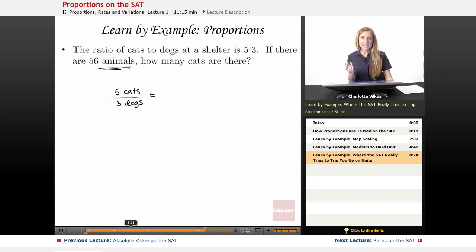So the SAT will set up a problem like this, which is probably a medium to hard proportion problem, and they expect students to put 56 animals down here and then X, which is your number of cats, up here and solve out and get your number of cats. But you know not to do this because over here I have cats over dogs and here I have cats over animals, which isn't going to work because these aren't the same units.